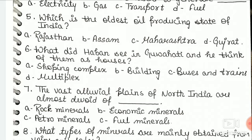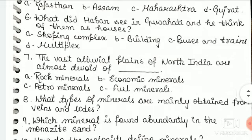Question seven: the vast alluvial plains of North India are almost devoid of — first option: rock minerals, second option: economic minerals, third option: petro minerals, fourth option: fuel minerals. Question eight: what type of minerals are mainly obtained from veins and lodes?